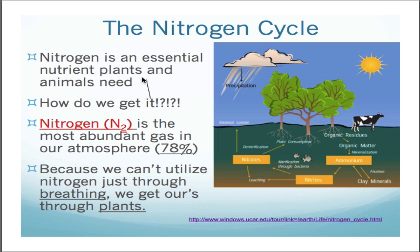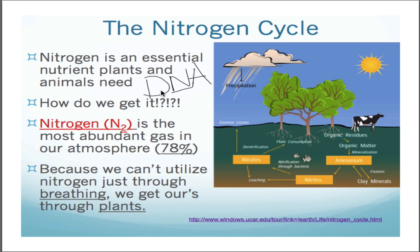I'll give you three letters: DNA. If you look at those three letters, the N revolves around nitrogen. Without nitrogen from the nitrogen cycle, we would not be here. So understanding the nitrogen cycle is going to be very, very important for understanding why we're here.